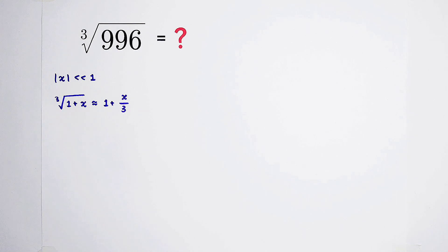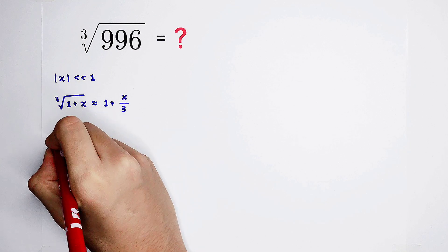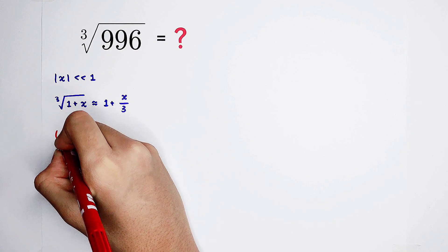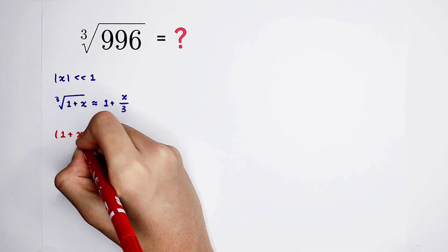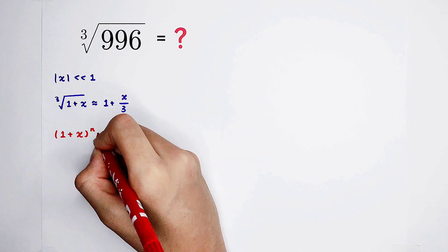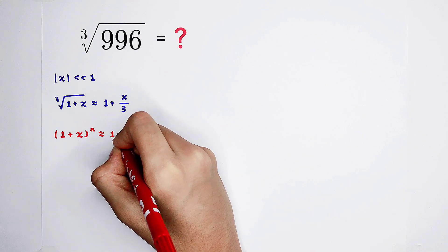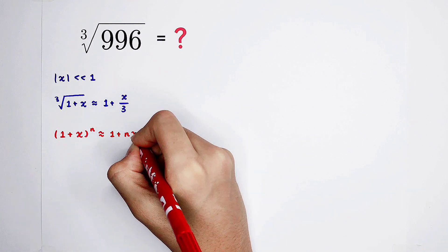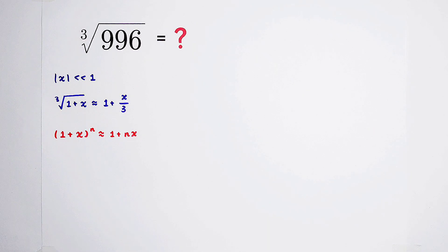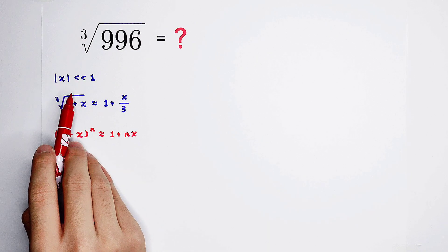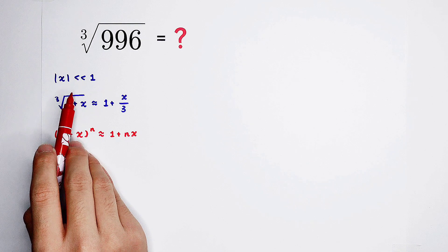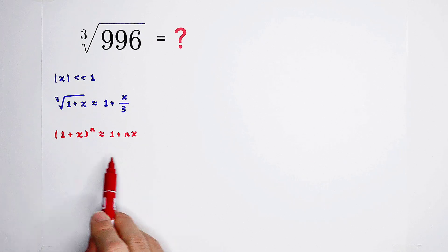It is only for this question. In general, it looks like this: 1 plus x to the power of n is approximately equal to 1 plus nx. The closer the absolute value of x to 0 is, the better the approximation will be.